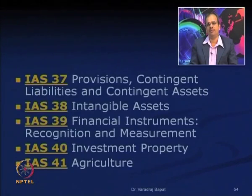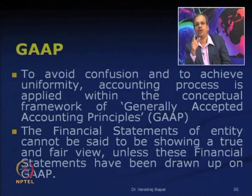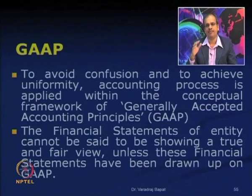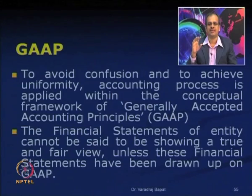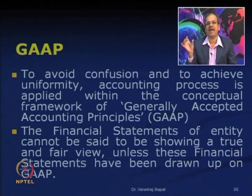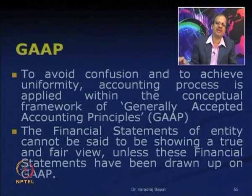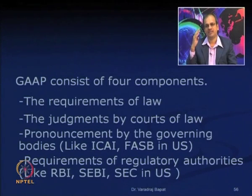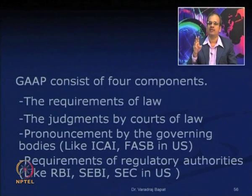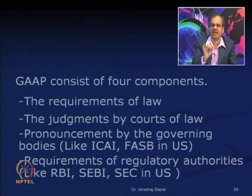You might have heard the term GAAP — Generally Accepted Accounting Principles. This is a term slightly wider than accounting standards, and its purpose is to have a conceptual framework to ensure uniformity and proper recording by the accounting system. Financial statements cannot be considered to show a true and fair view unless they are drawn up as per GAAP. GAAP has 4 components. The first is requirements of law — if there is a legal provision that certain items are to be recorded in a certain way, they form part of GAAP. For example, the Banking Regulation Act prescribes a certain balance sheet format for banks.